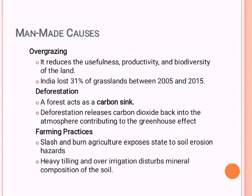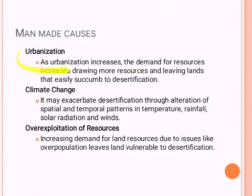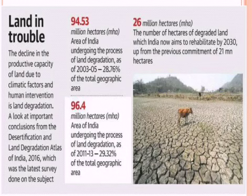The man-made causes of desertification include: over-grazing — 31% of grasslands were lost between 2005 and 2015; deforestation — forests act as carbon sinks, sequestering CO2, and deforestation negates this; poor farm practices like slash-and-burn agriculture, heavy tilling, and over-irrigation that disturb soil composition; urbanization creating concrete jungles; climate change; and over-exploitation of resources. Natural disasters also displace fertile soil, and water and wind erosion cause further land trouble.